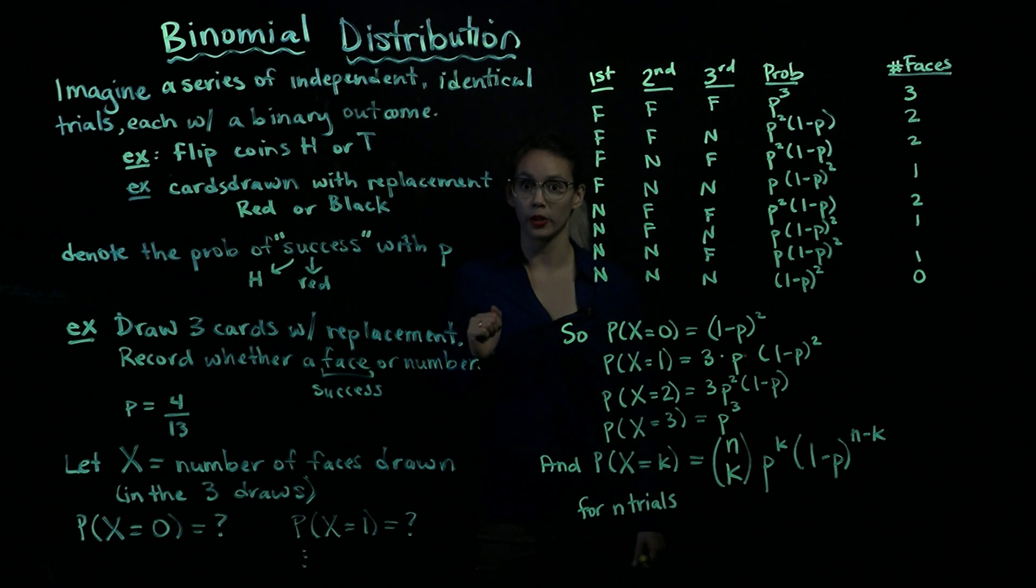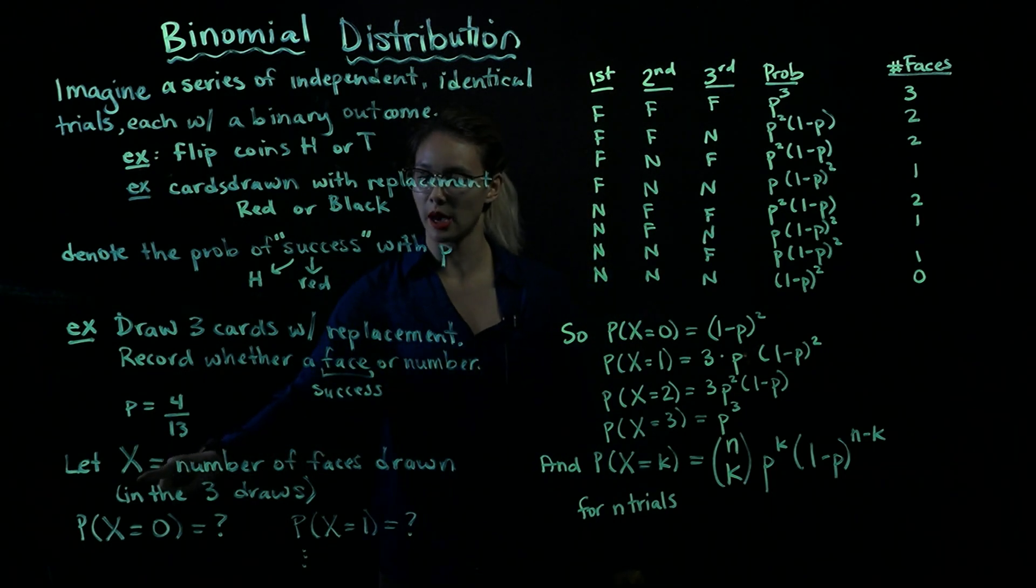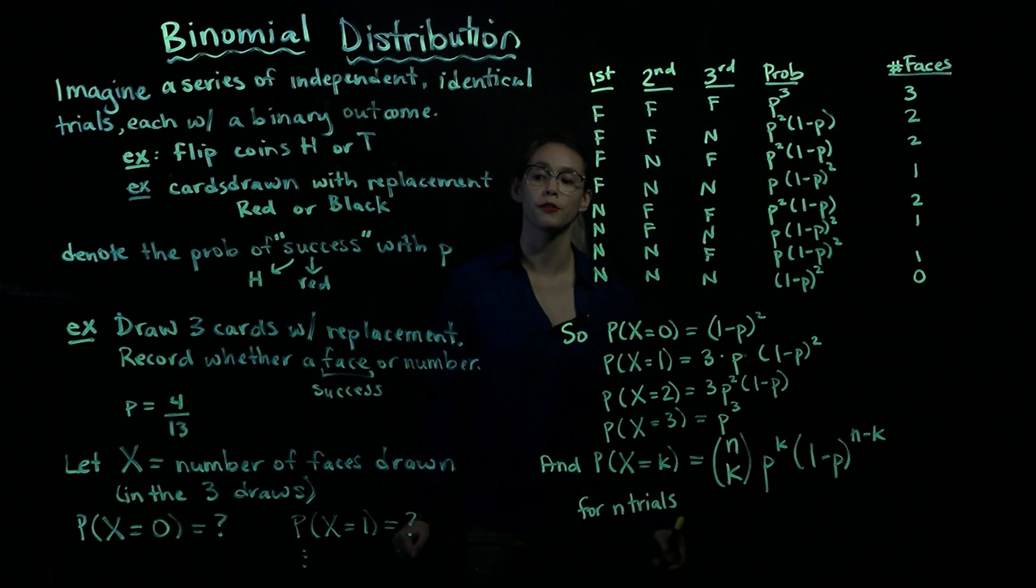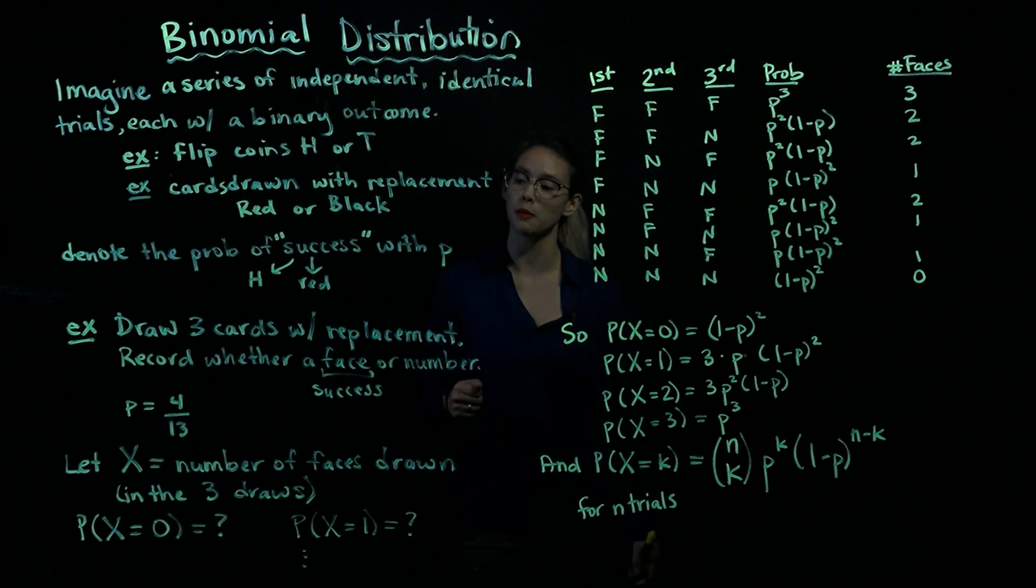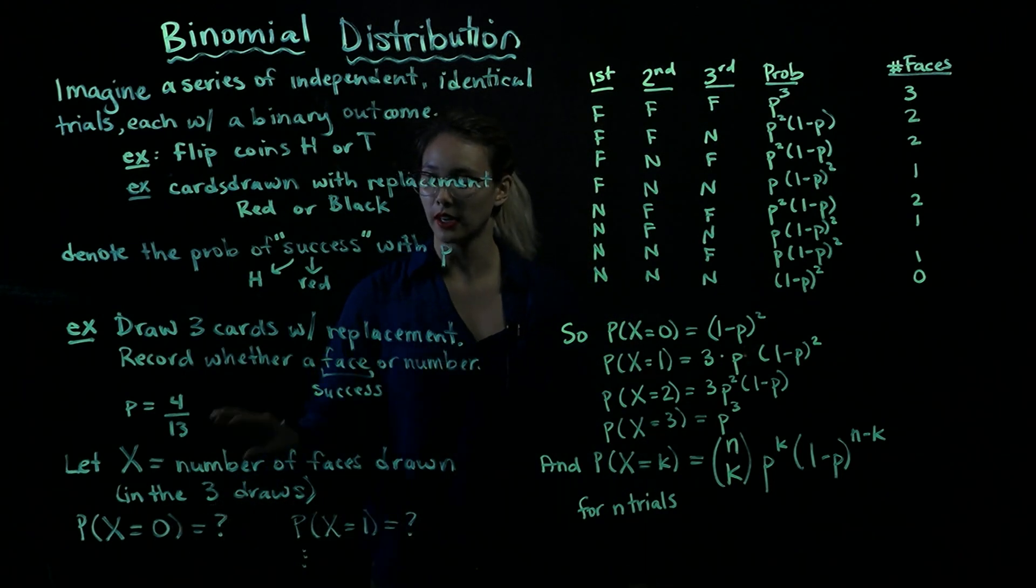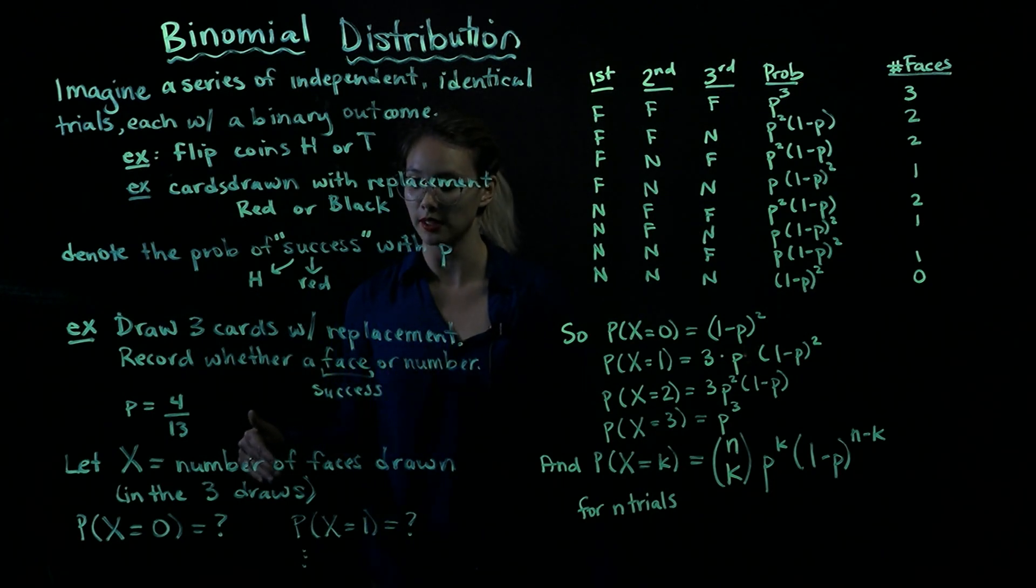Okay, so let's define a random variable X. So here's this capital X, and that is going to be the number of faces drawn in those three draws. So we might be wondering, what's the probability that I draw three cards with replacement and get absolutely no faces?